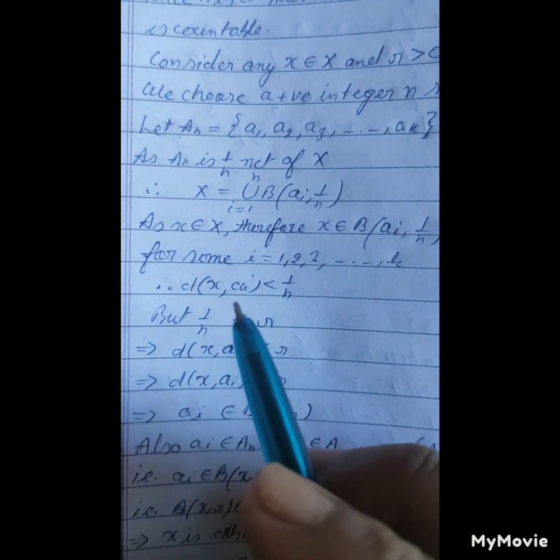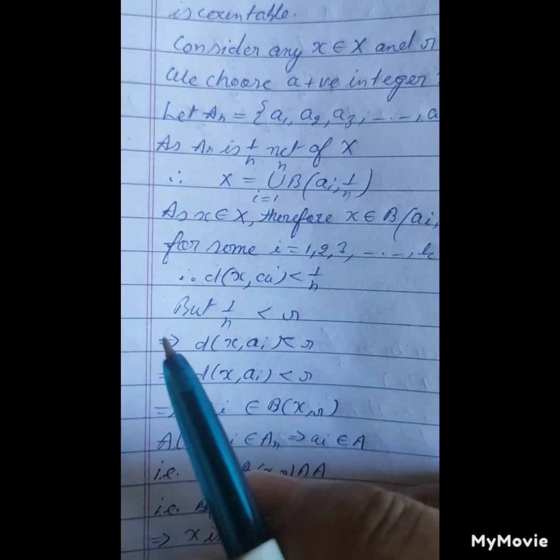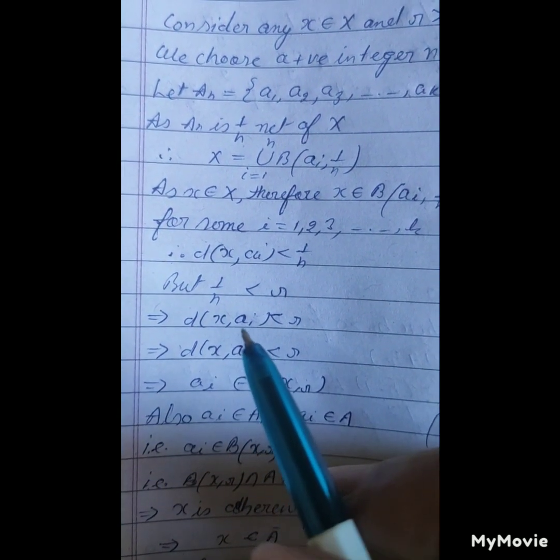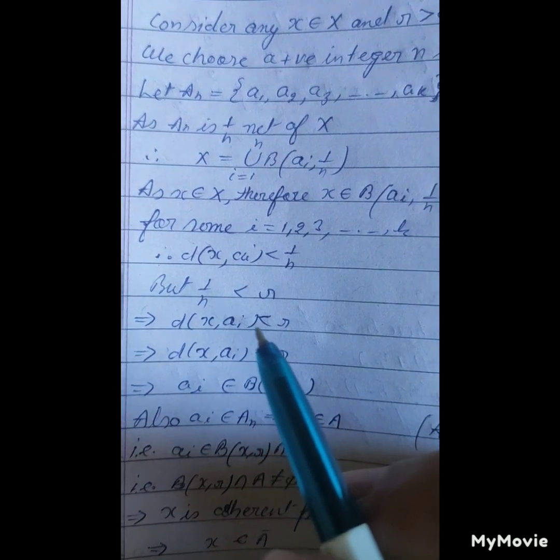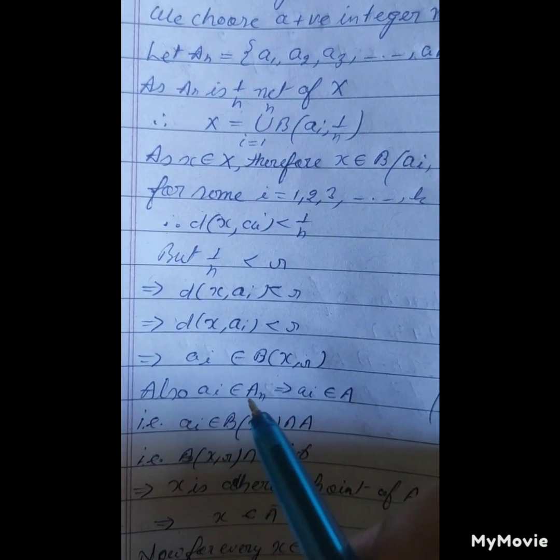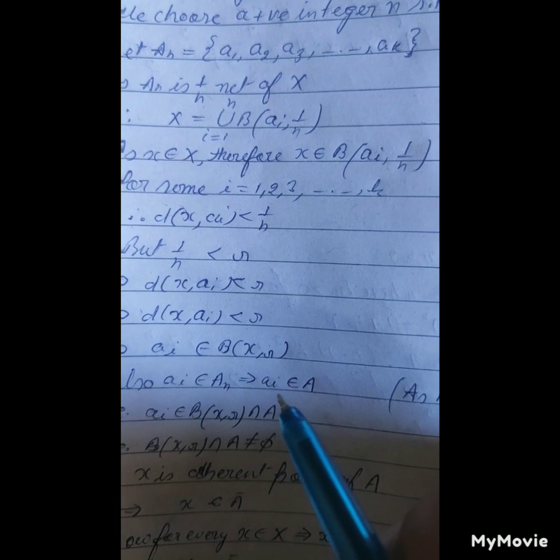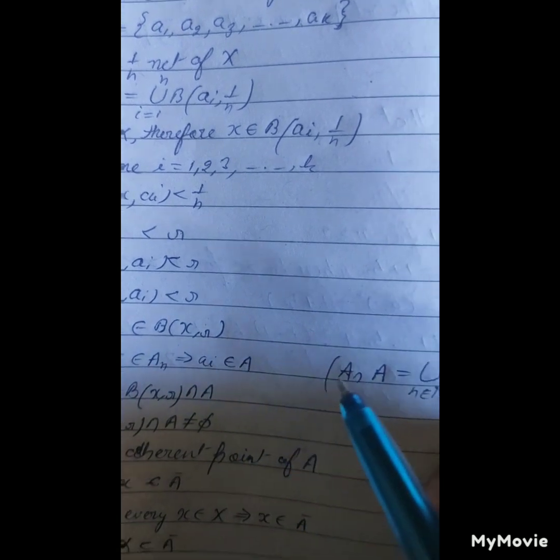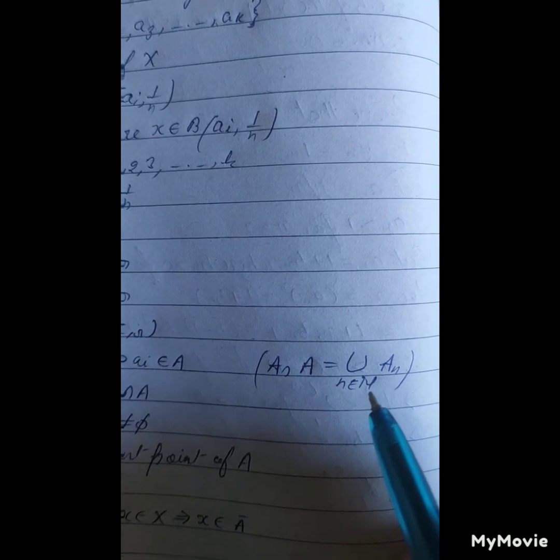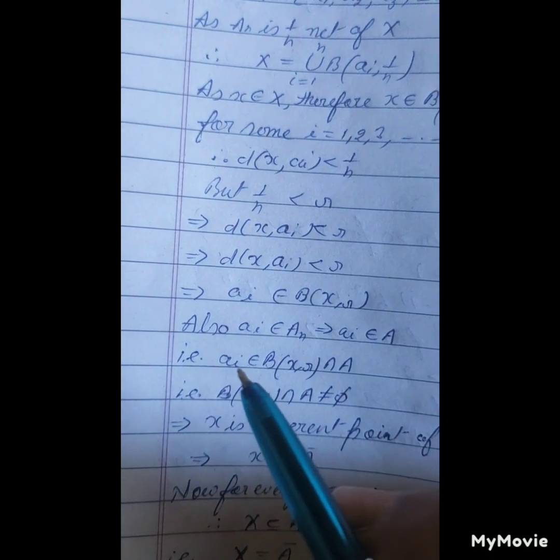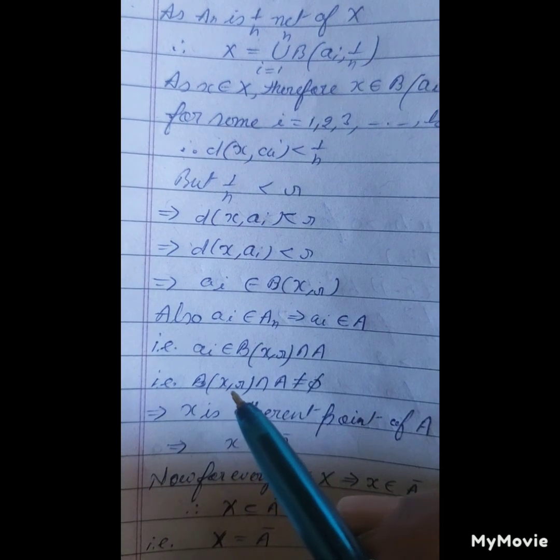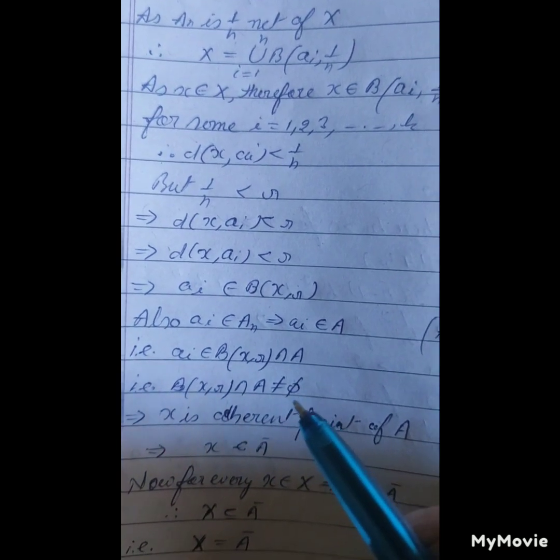So d(x, a_i) is less than 1/n. But 1 upon n is less than r, so d(x, a_i) is less than r. Therefore a_i belongs to B(x, r) intersection A. That is, B(x, r) intersection A does not equal phi.